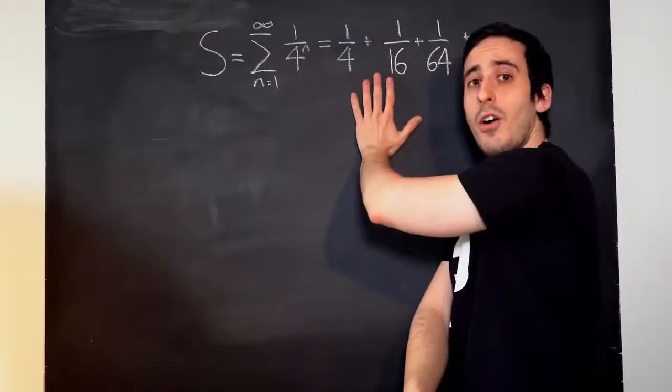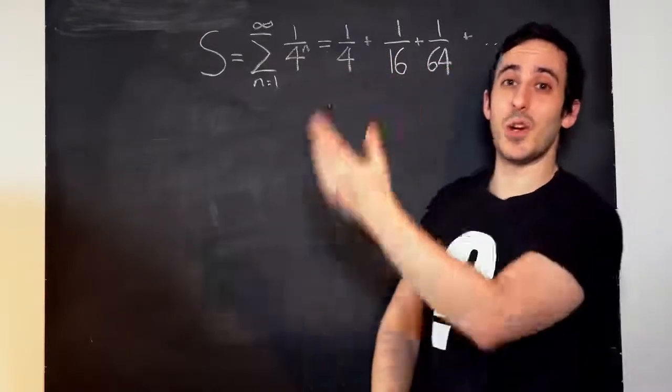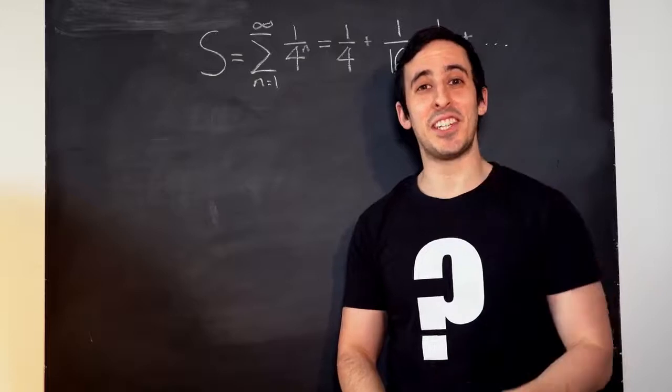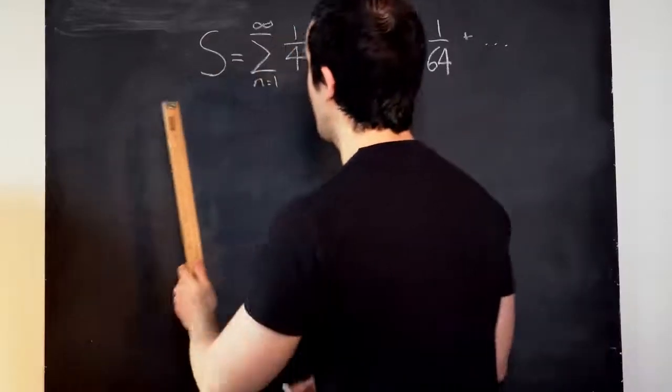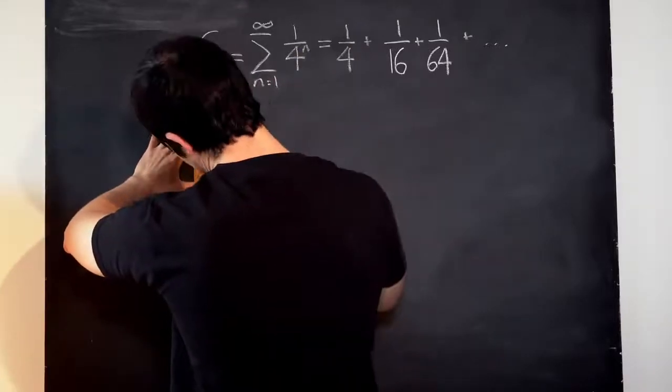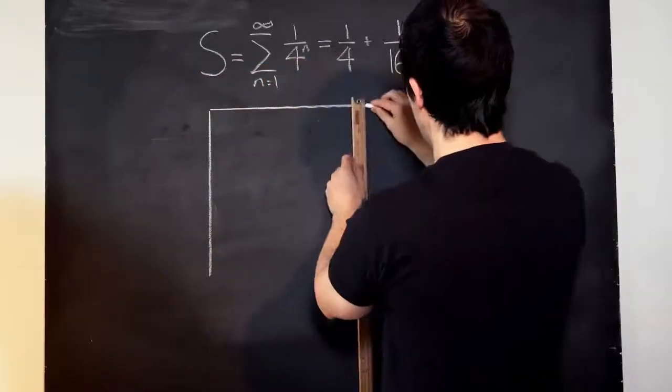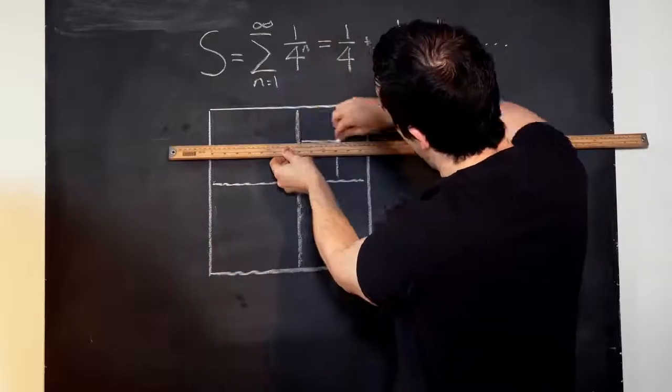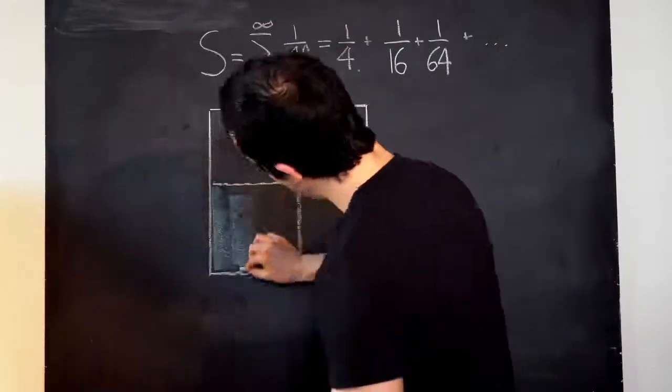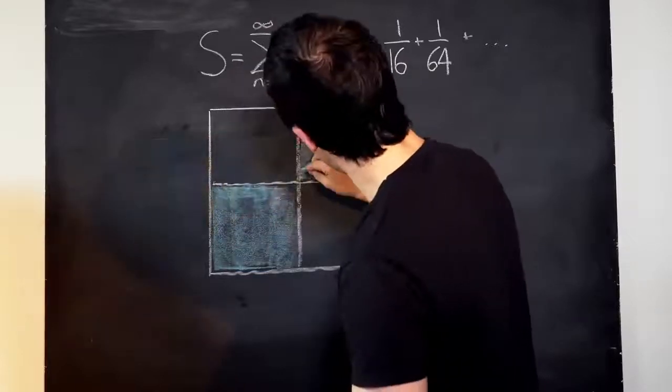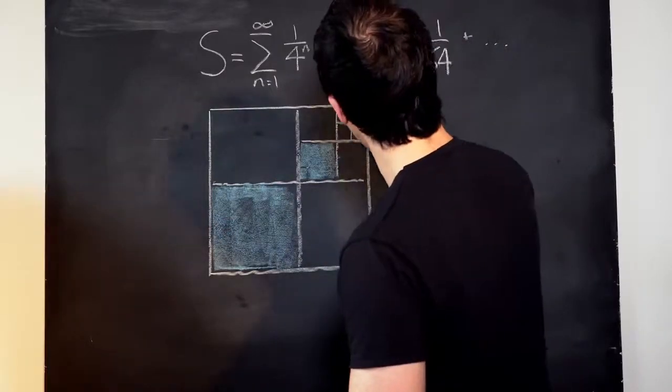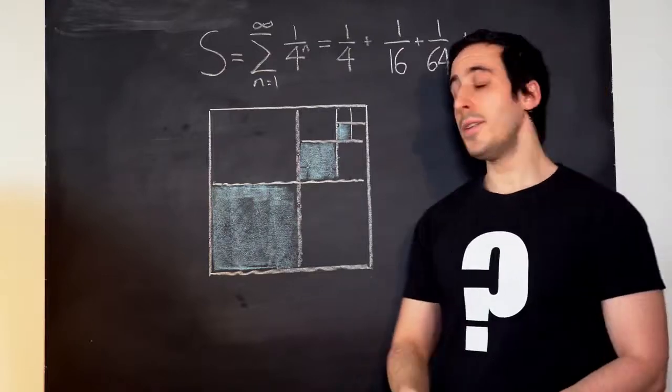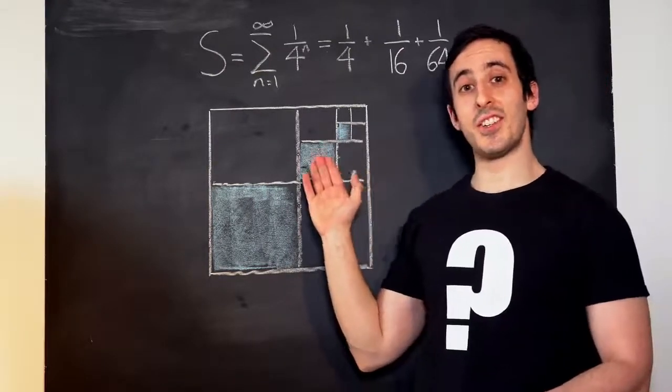Now, this is a really unobvious sum, right? It's hard to see how we could solve this. And it's very unobvious what it's going to equal. But let's draw a picture on the blackboard. And then let's see if that sheds any light on it.